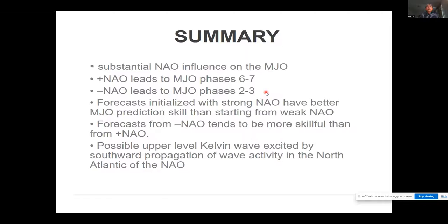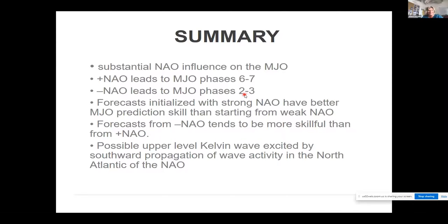To summarize: there is a substantial influence of NAO on the MJO. Positive NAO leads to MJO phase six and seven; negative NAO leads to phase two and three. Forecasts initialized with strong NAO have better MJO forecast skill than those initialized with weak NAO. Also, negative NAO tends to produce more skillful forecasts than positive NAO forecasts.